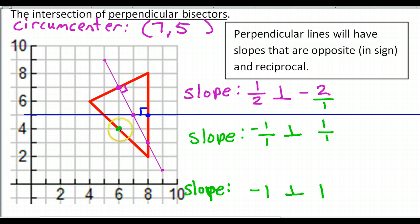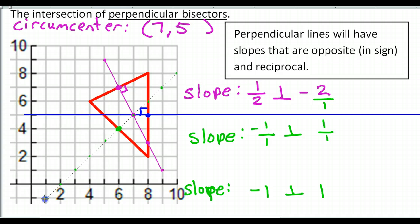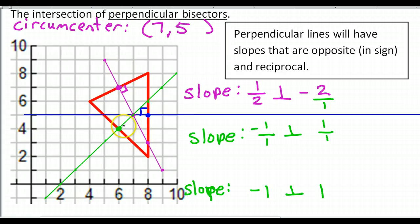Starting from the midpoint, let's use the perpendicular slope and go up 1, right 1. Up 1, right 1. Up 1, right 1. Up 1, right 1. I could put more points in this direction like so. These green dots are showing you where my third and final perpendicular bisector will be. There's my third and final perpendicular bisector. It's perpendicular right here — perpendicular to the side — and it's a bisector of the side; you can see it's the midpoint. As we knew it would, this green perpendicular bisector hit the same intersection point — the point 7 comma 5.